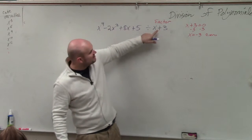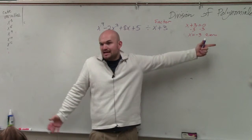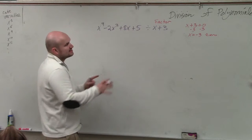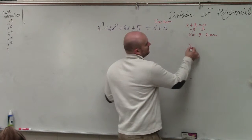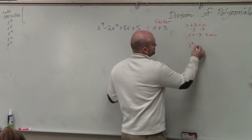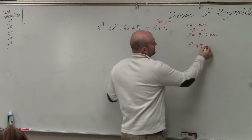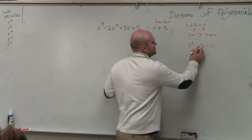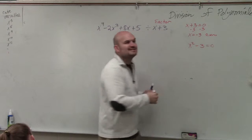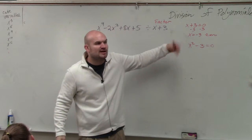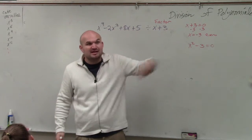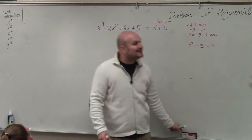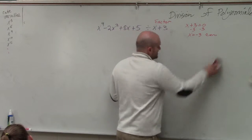You have to know the difference between the zero and the factor. The factor is what you would set equal to 0 and then solve. Do you see how this would have two solutions? Because taking the square root, you have plus or minus — so you'd have two answers. That's why synthetic division only works when you have a linear factor as your divisor.